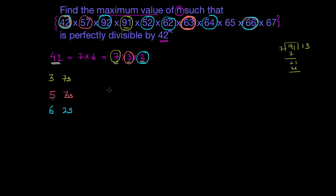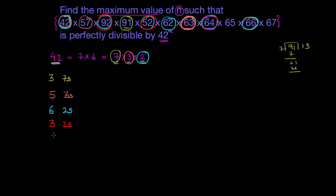Numbers divisible by 4 will give me an extra 2. 92 is divisible by 4, so I'll have one number here that is divisible by 4. This is again divisible by 4. This is again divisible by 4. This is not divisible by 4. This is again divisible by 4. This is not divisible by 4. So I'll have 3 numbers which give me extra 2s. There can be another number containing 3 twos — it should be a multiple of 8. Checking: 64 is divisible by 8, so I get one more 2 from there. In total: 6 plus 3 is 9, and 1 more makes 10 twos.